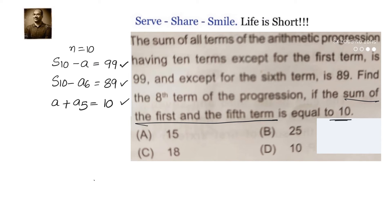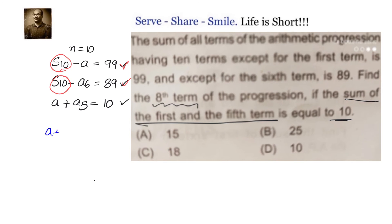So that we can calculate what is the eighth term of the progression. If I take the first two equations, I have S10 common in both of them. So I can write down that a plus 99 equals a6 plus 89, because S10 is a plus 99 and S10 is also a6 plus 89.